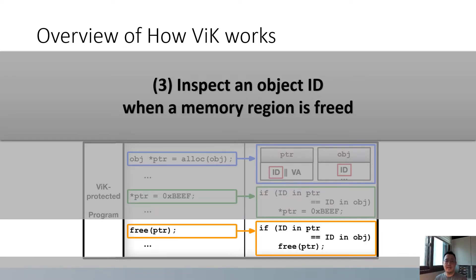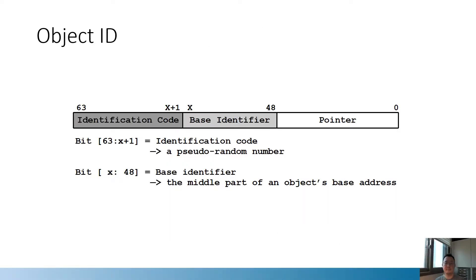In addition, VIG inspects object IDs when freeing the object to prevent double-free violations. From now on, I will explain the object ID. We carefully designed the object ID because it directly affects the security and applicability of VIG.